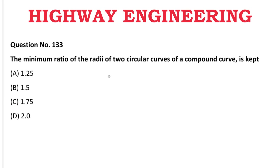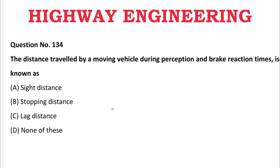Next question: The minimum ratio of radii of two circular curves of a compound curve is — A: 1.25, B: 1.5, C: 1.75, D: 2.0. The correct answer is B, 1.5.